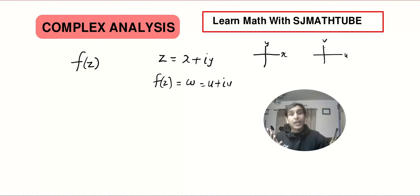And we may or may not consider the entire plane for the input. For example, I can consider the input to be a circle. That means I will consider only the points on the circle as the input. And correspondingly, if I write a function like sine Z, I can plug in the complex numbers one by one and I will get the output.